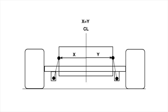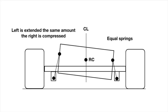Let's look at these slides as an example. In this first slide, our setup has equal springs — say a pair of 200s — on both sides of the car, equidistant from the centerline. In the next slide, if we roll the car, the left side is going to extend the same amount as the right side compresses. Equal springs — still our same 200 on each side.